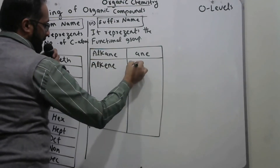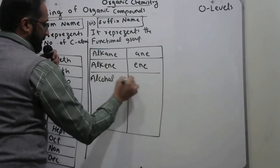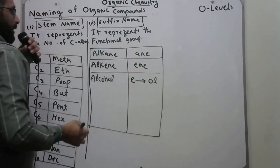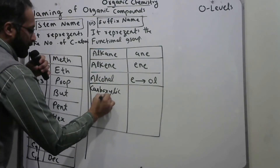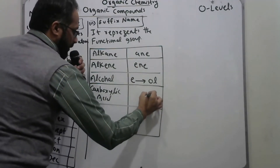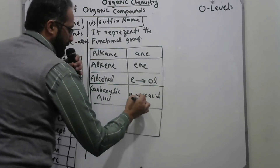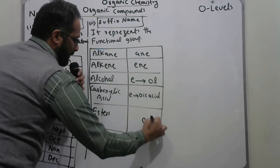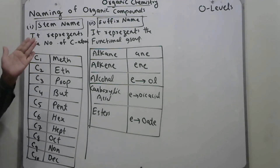For alcohols, the suffix used is 'ol' — you replace the 'e' of alkane with 'ol'. For carboxylic acids, the suffix used is 'oic acid' — again replacing the 'e'. For esters, we use 'oate', replacing the 'e' of alkane with 'oate'. These are the organic compound types in your syllabus.